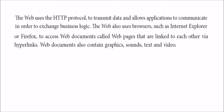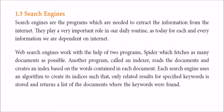The web uses HTTP — Hypertext Transfer Protocol — to transmit, send, and receive data. Web browsers like Internet Explorer, Firefox, and Google Chrome are used to access documents written in HTML, which are linked together through hyperlinks. These pages contain graphics, sound, text, videos, and search engines.